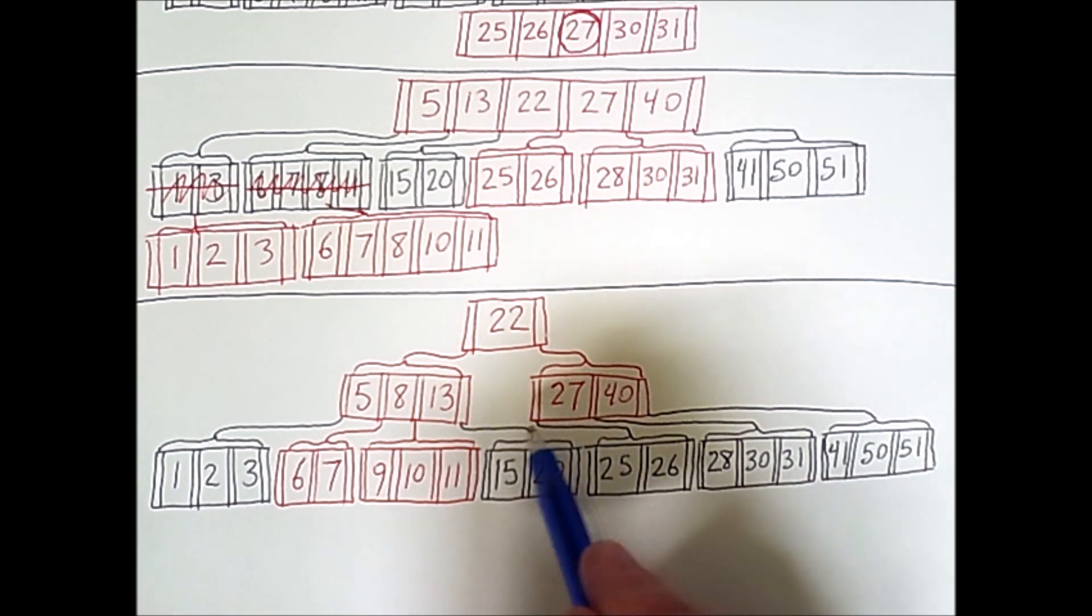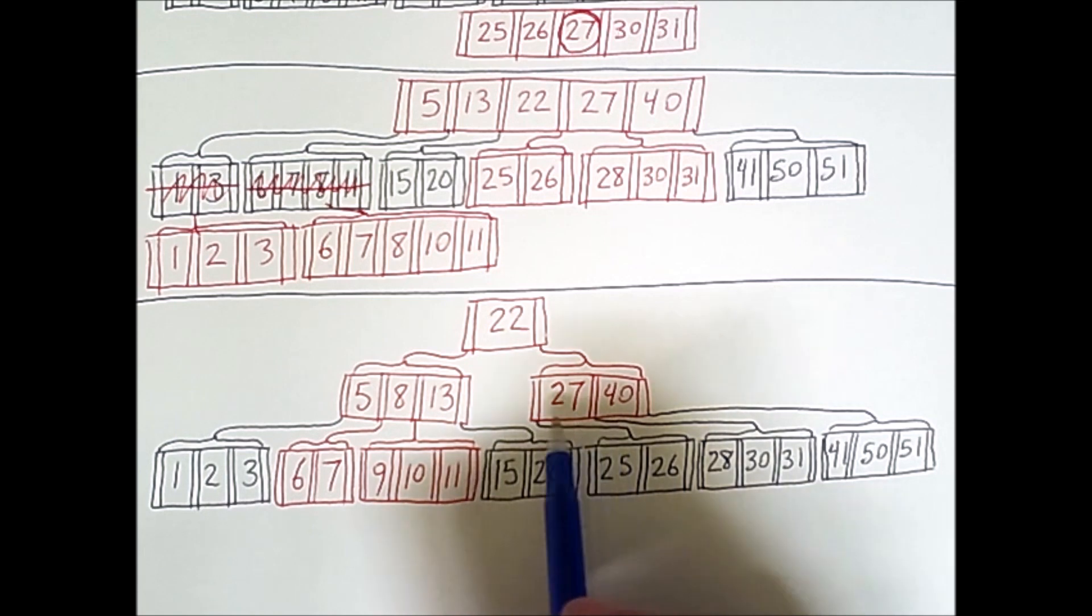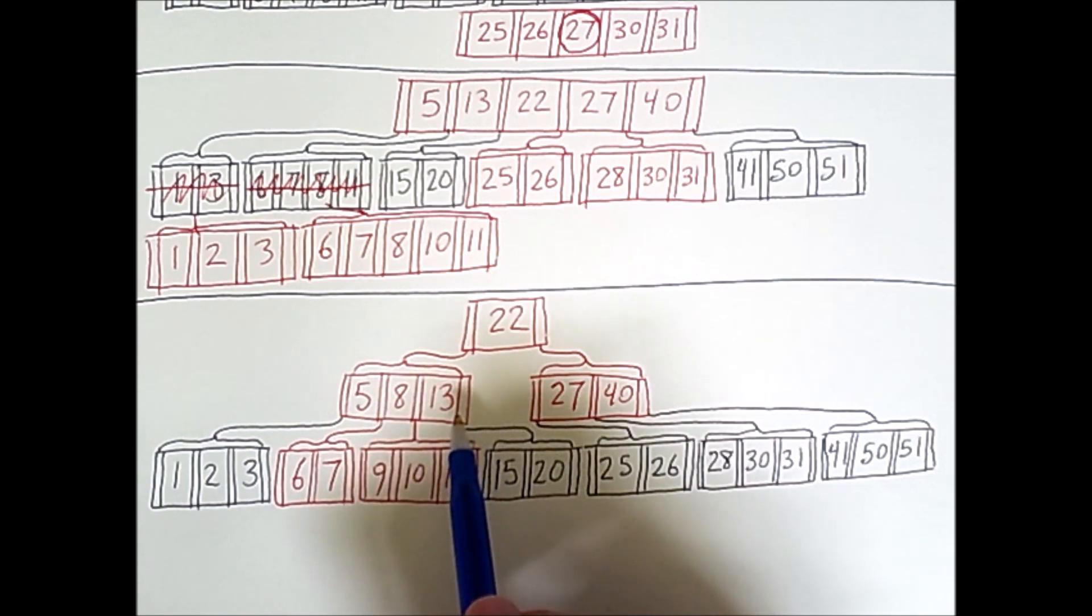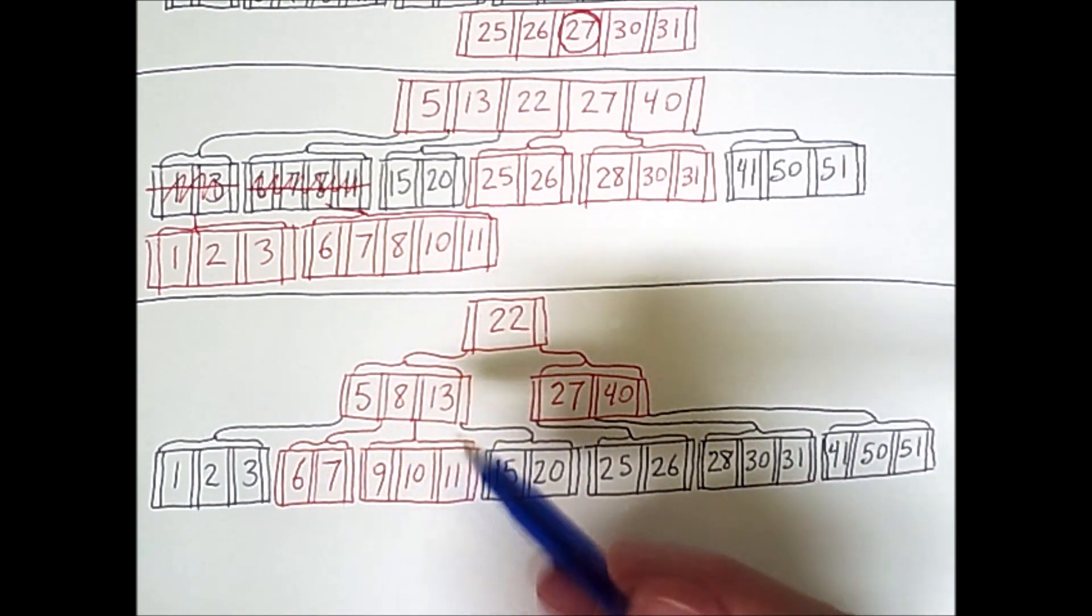And after the insertion, we'll have one node that is exactly the min degree in size because this node has three pointers, three child nodes, hence the degree of 3. And this one has four child nodes because we just inserted an 8, which was promoted from below.